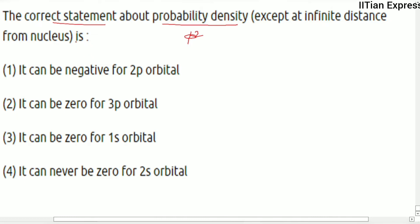We have four options. Option 1: It can be negative for 2p orbitals. No, this is the wrong statement. Option 2 states: It can